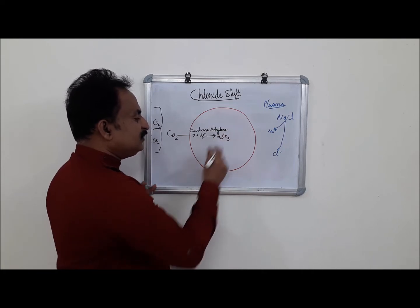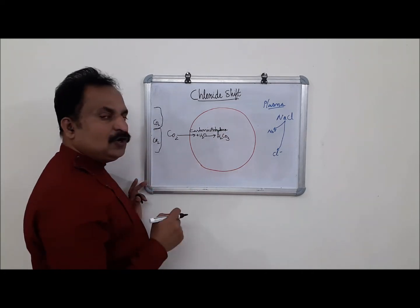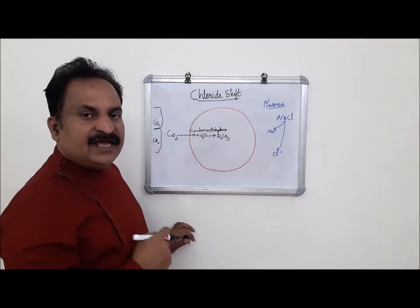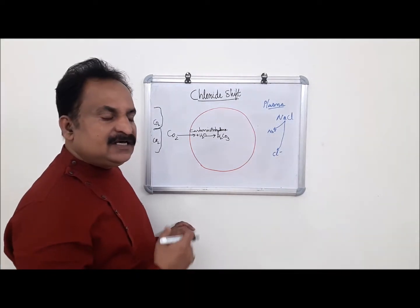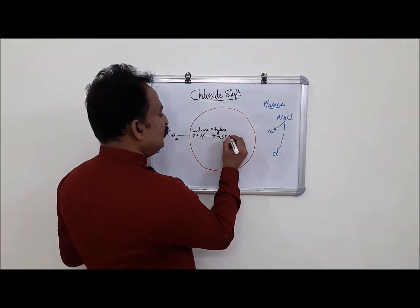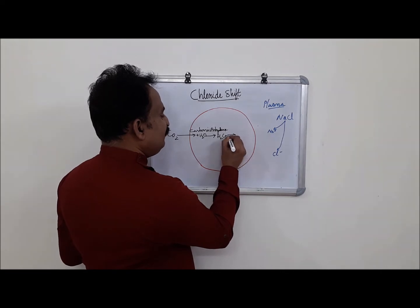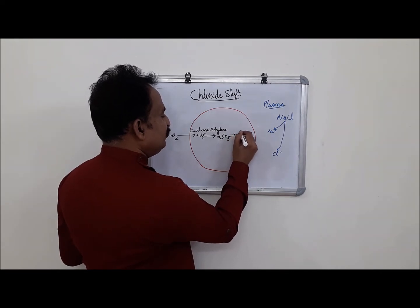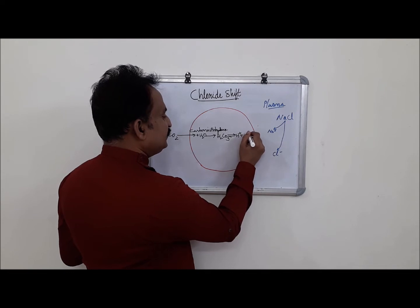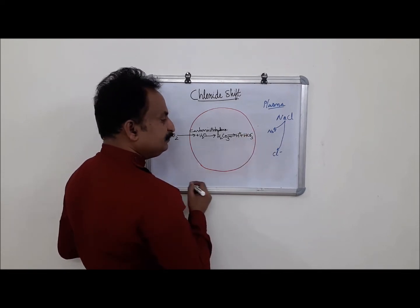Carbonic acid is a dibasic acid, which will undergo ionization and form H+ ions and HCO3-, that means bicarbonate ions.